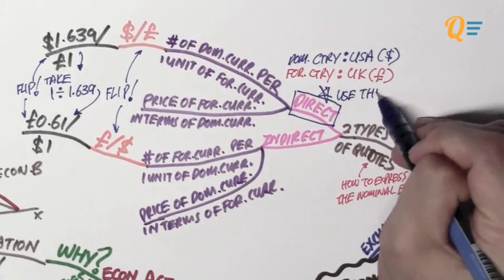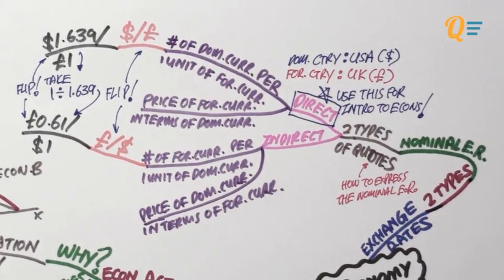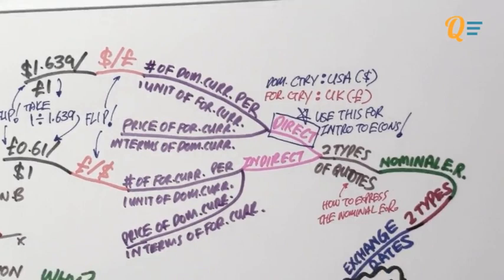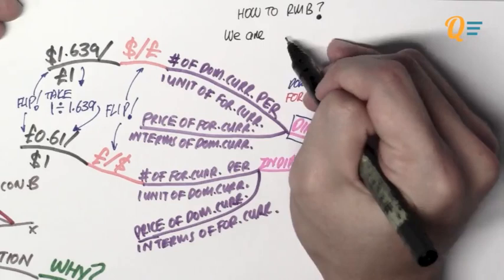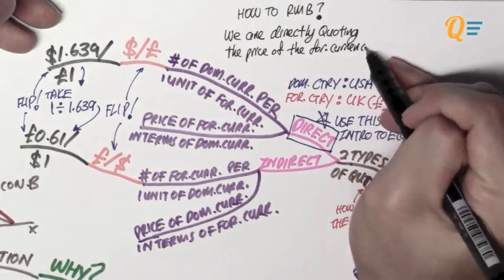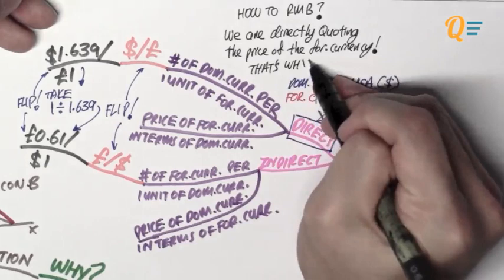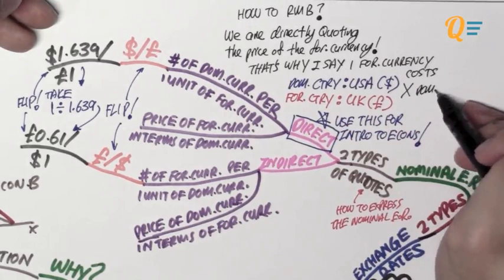For the introduction to economics syllabus, what we'll be using is the direct quote. Now that you understand both types of quotes, just remember that you have to use the direct quote for your exams. To remember: we are directly quoting the price of the foreign currency, and that is why we say one foreign currency costs x amount of domestic currency — that is how I would remember that I'm using the direct quote and what it means.